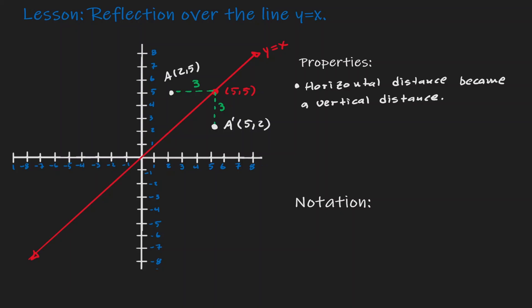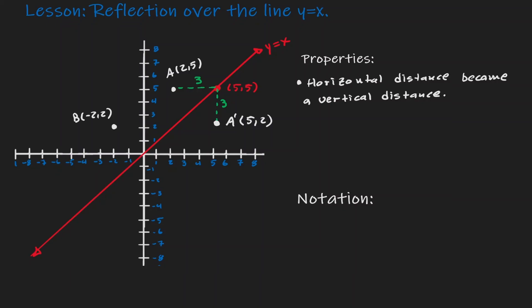Now let's do this one more time with a different point. Let's start by finding its horizontal distance. The distance from negative 2 to positive 2 is 4. And from this line, let's move 4 units down. Now we have found the image of B at the location of 2 comma negative 2.